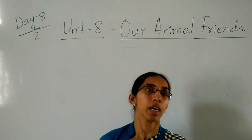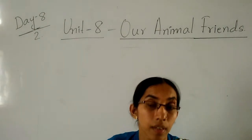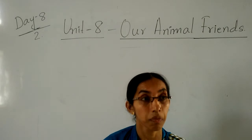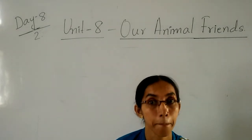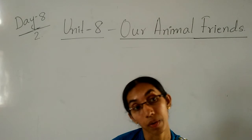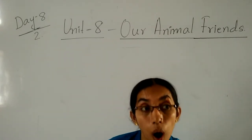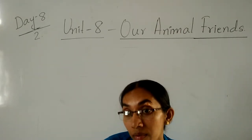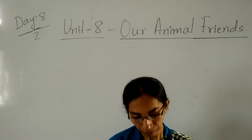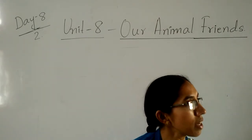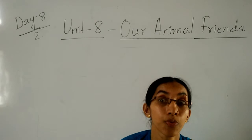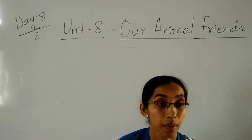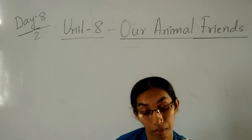Which animals crawl? Yes — snake and centipede. Very good. Which animals fly in the sky? All birds. Very good. Which animals live on trees? Monkeys and birds. Good. Which animals live in the sea? Fish, crocodile, crab, octopus. Very good.